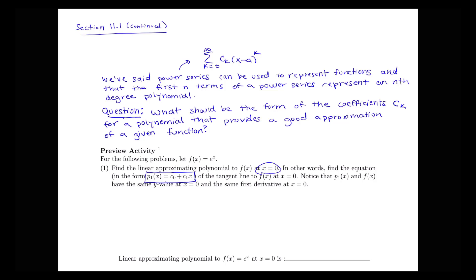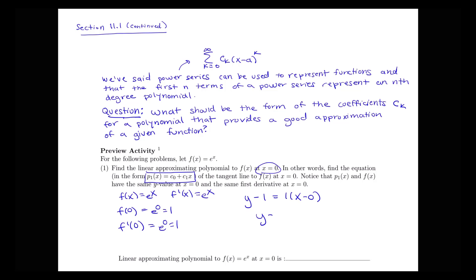We're finding an equation in the form of a first order linear polynomial: c_0 plus c_1 x. We know how to do that — we need the value of the function and its derivative at x equals 0. Both e to the x and its derivative at 0 equal 1, so the tangent line is y minus 1 equals 1 times (x minus 0), giving y equals x plus 1. So p_1(x) equals 1 plus x.